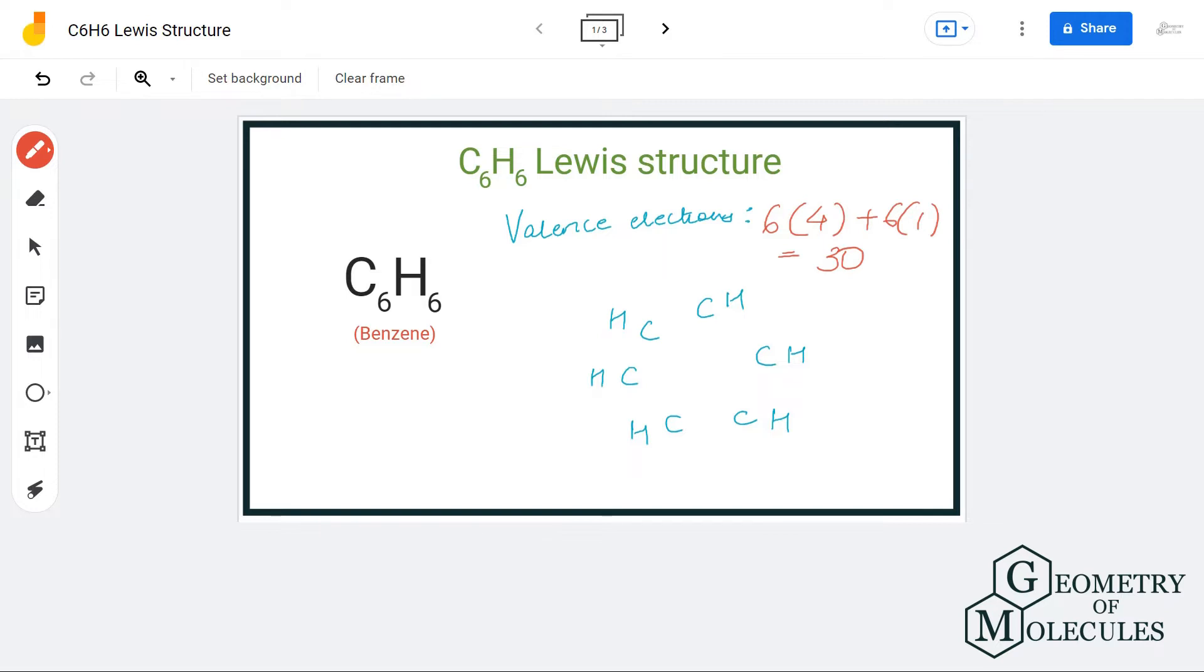Now, the arrangement of the atoms will be different from linear molecules because this is a cyclic molecule. The carbon atoms will be arranged like this, and each hydrogen atom will form a bond with one carbon atom. So let's place hydrogen atoms like this.